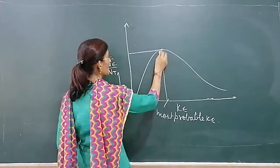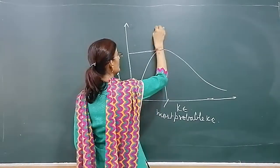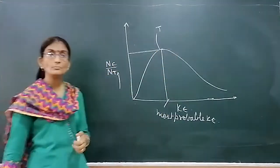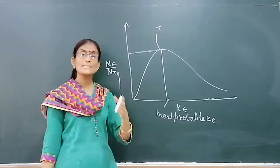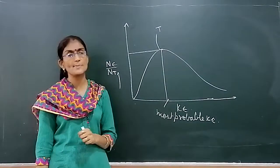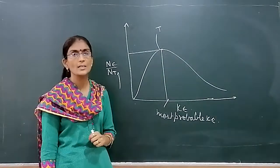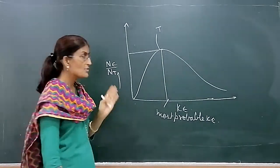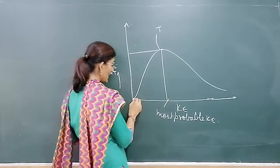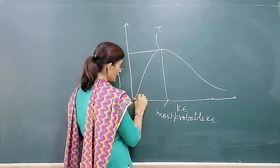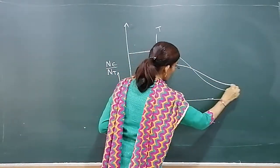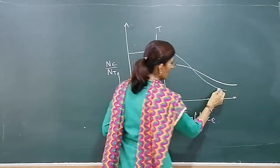Suppose this graph is at a particular temperature T. Now if we increase the temperature just by 10 Kelvin, he saw that the graph shifted towards the right side. This is how the graph shifts.